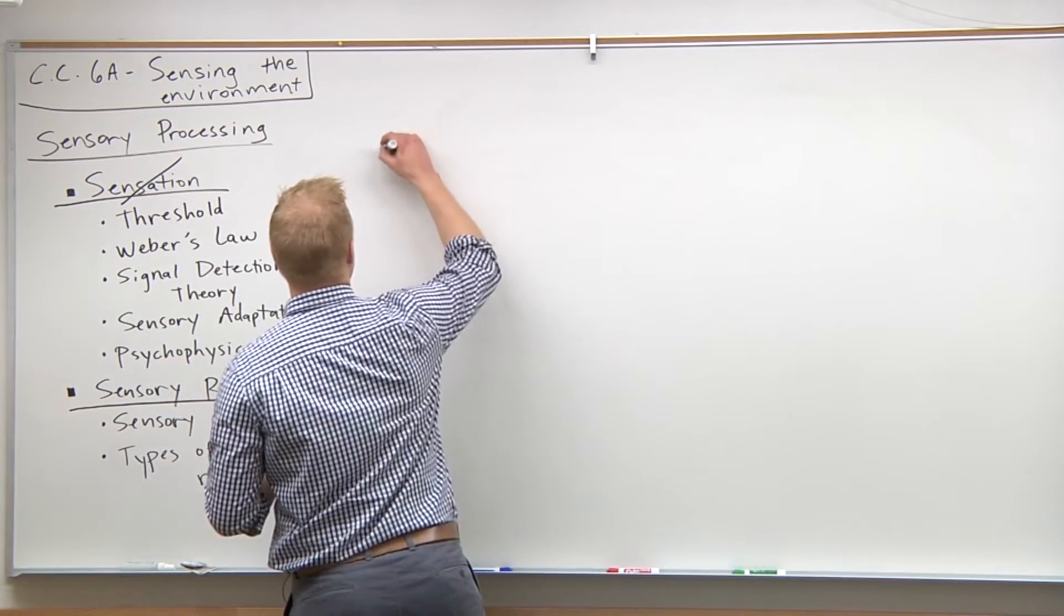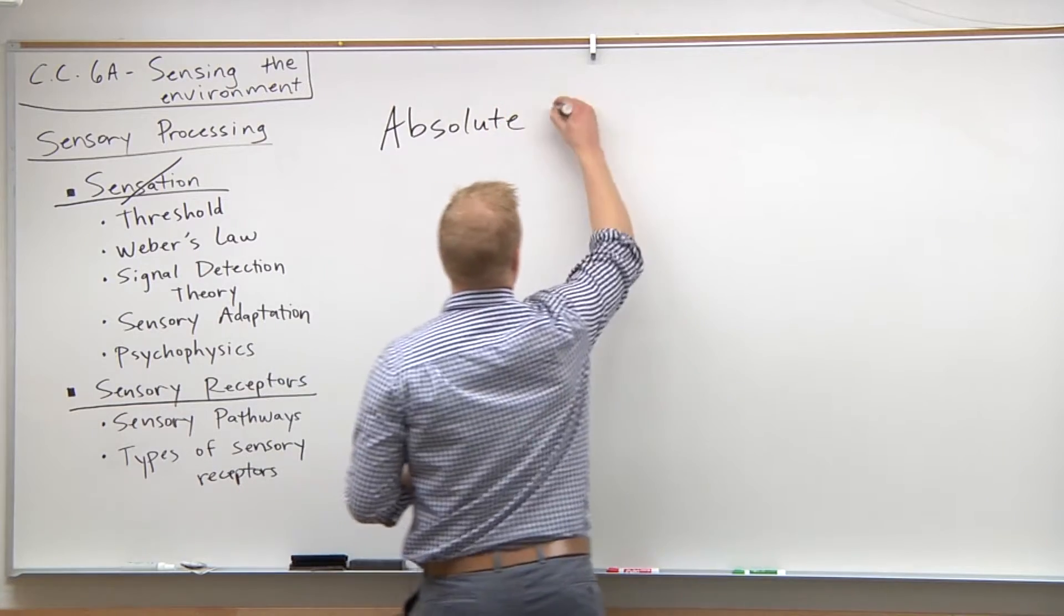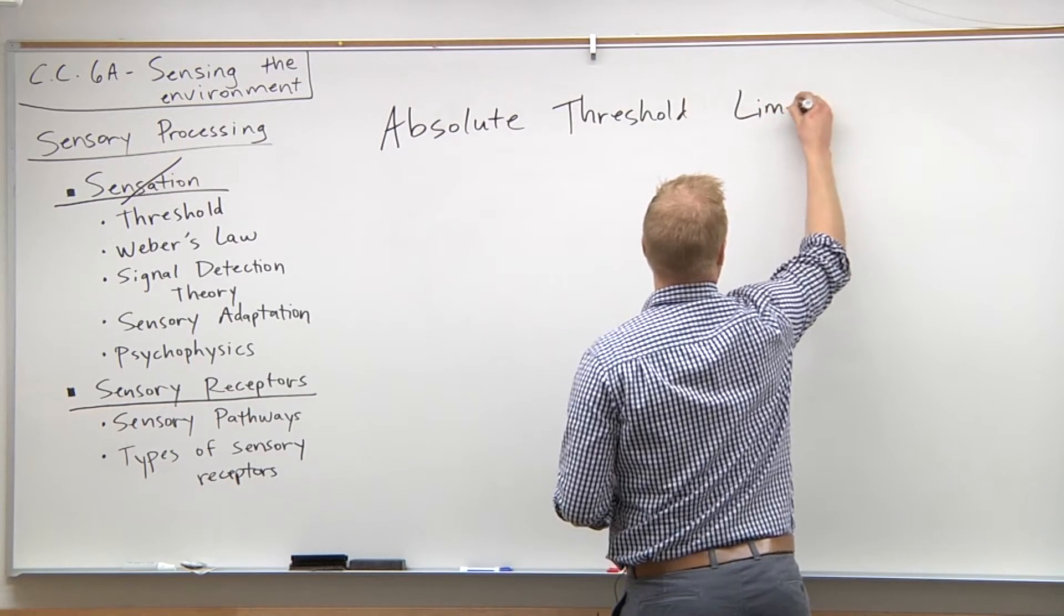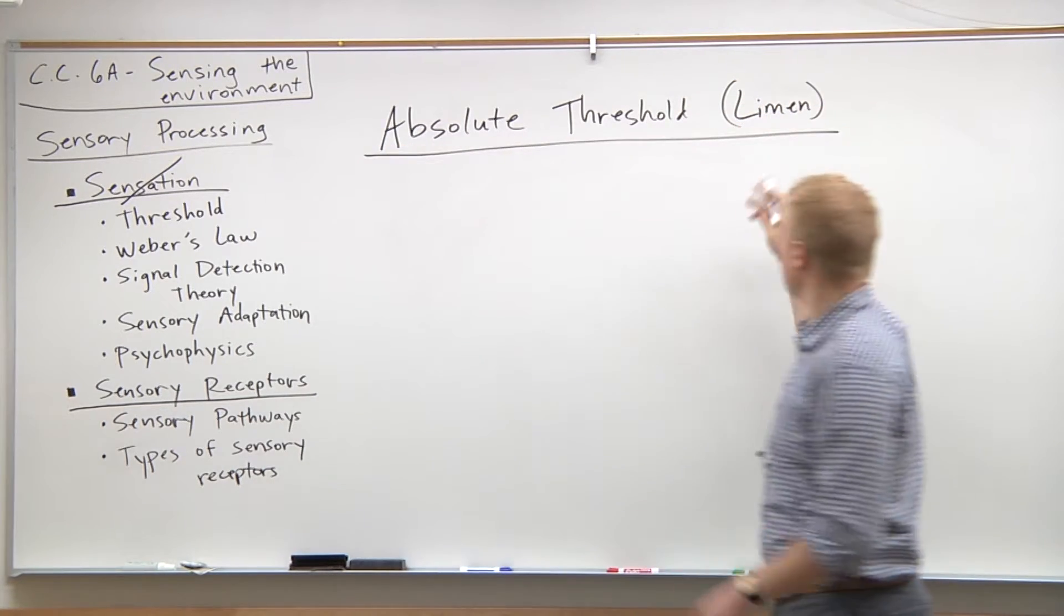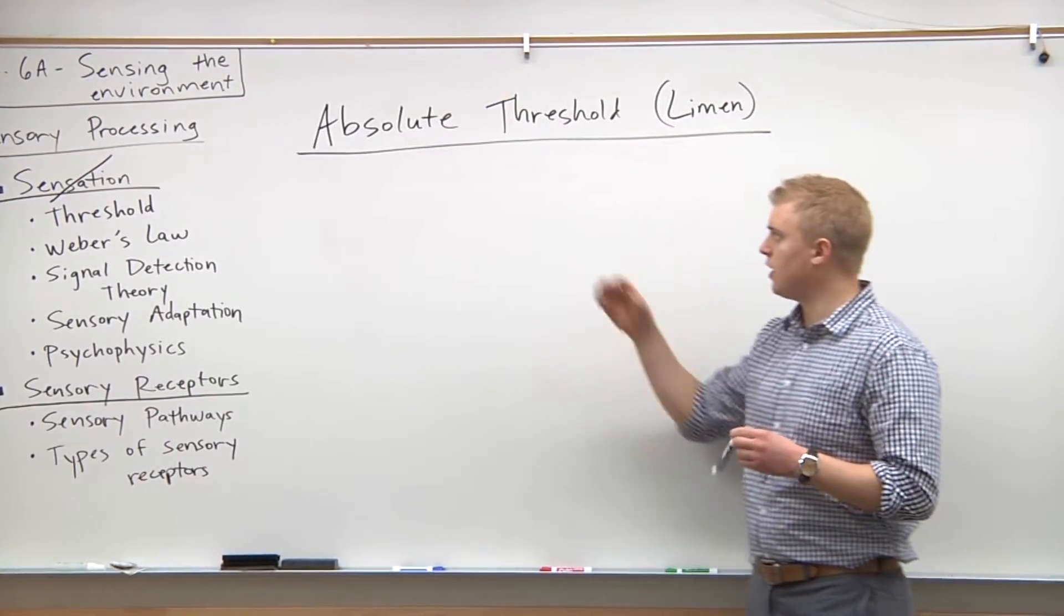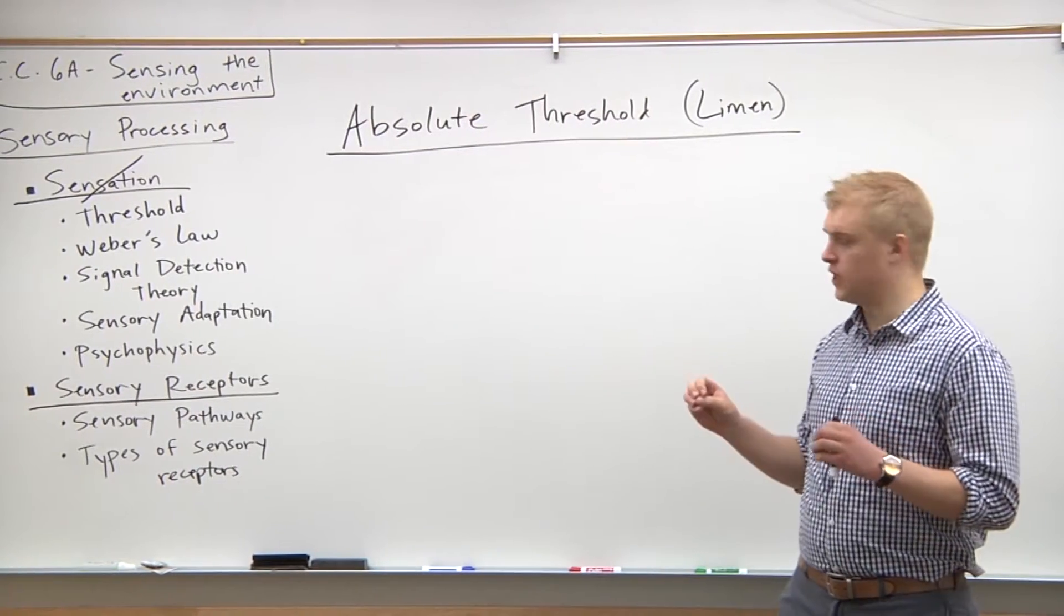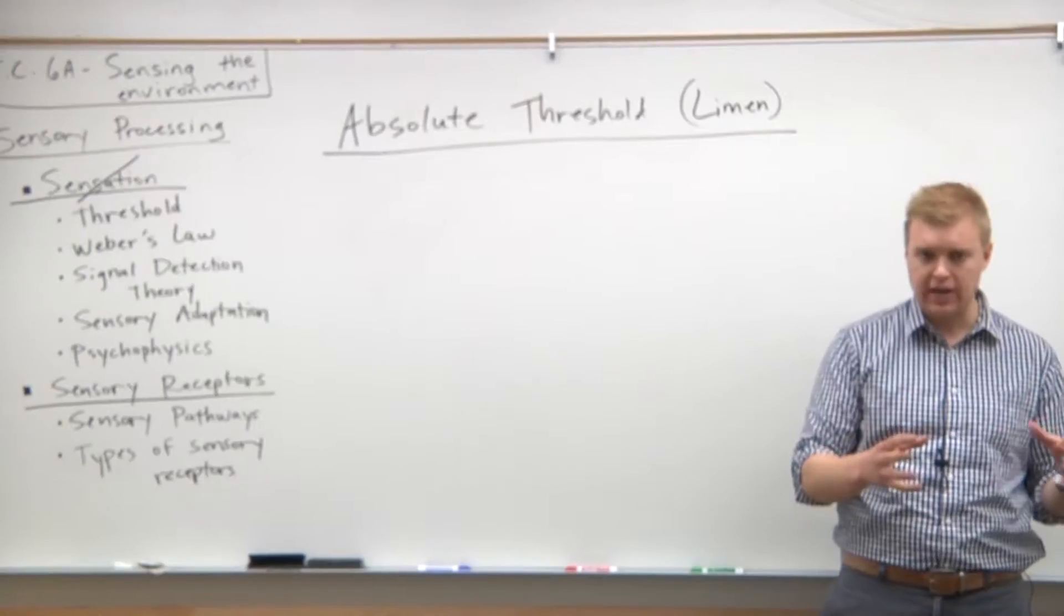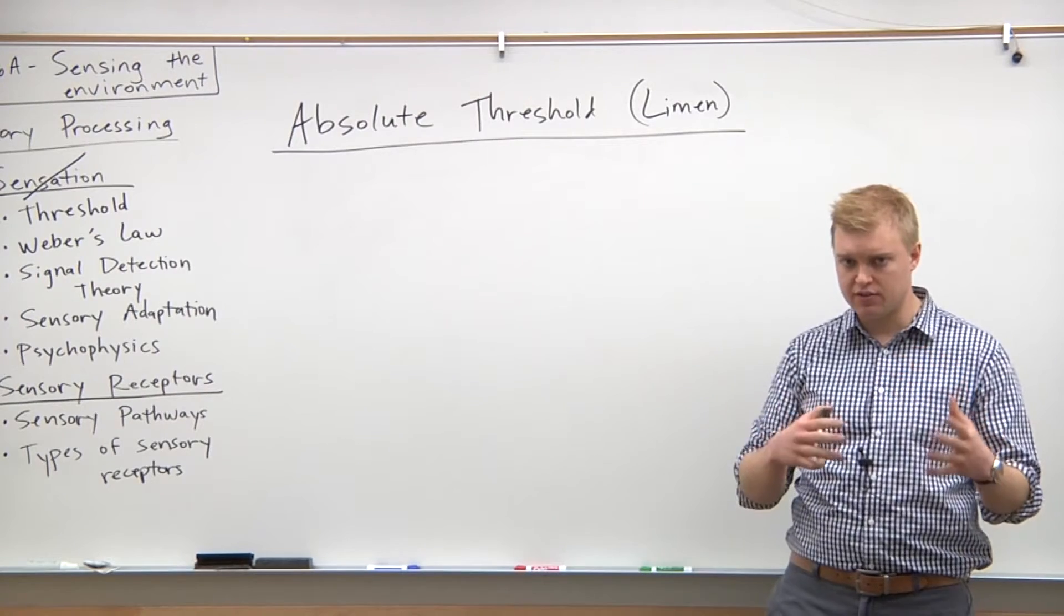Let's talk about the first kind of threshold the MCAT requires you to know: the absolute threshold. The absolute threshold, also called limen (the German term for threshold), is the minimum amount of stimulus intensity required for an individual to recognize or detect a stimulus 50% of the time. This is dependent on the fact that the stimulus is long enough to activate the sensory system.